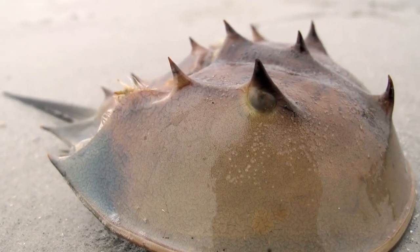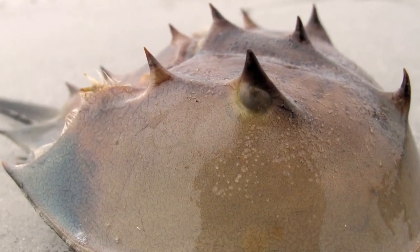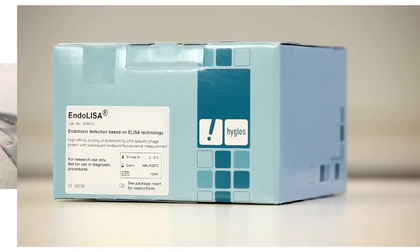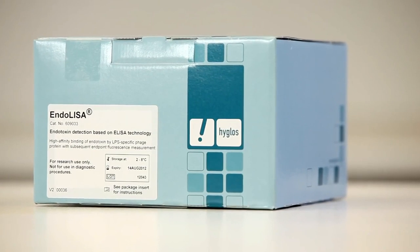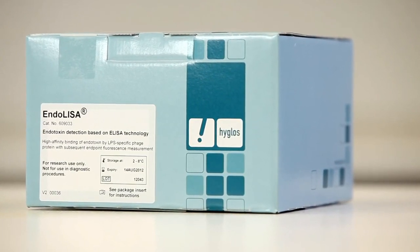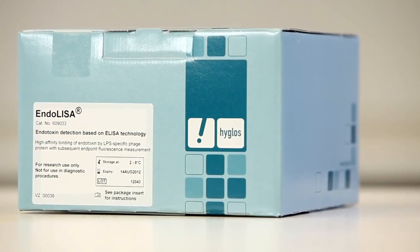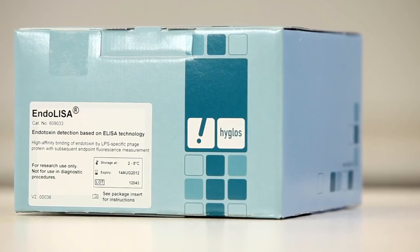For years, the LAL assay using blood from endangered horseshoe crabs was the only method for endotoxin detection. Endolysa is a new method for detecting endotoxins in pharmaceutical and biological products. Hygloss developed Endolysa to overcome the limitations of LAL without using animal products of any kind.